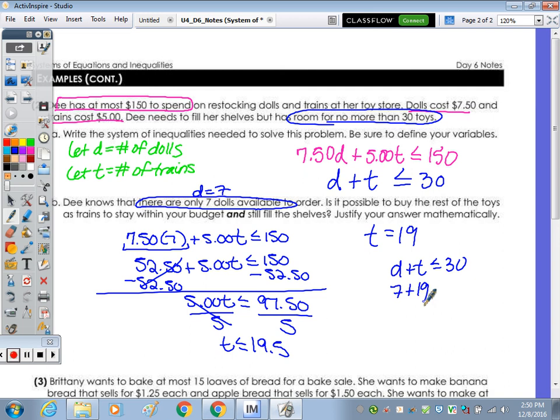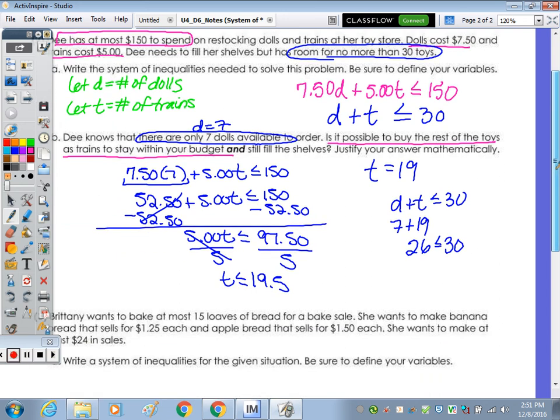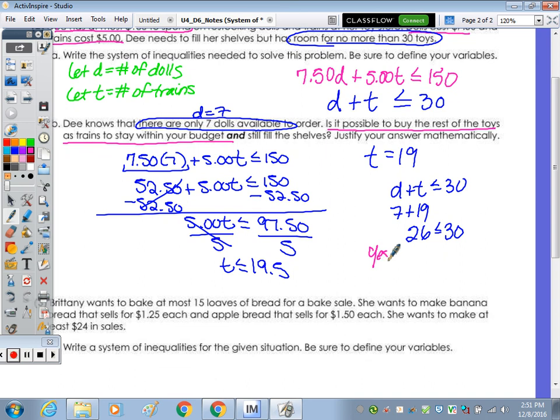So if I plug in the 7 dolls she knew and had the 19 trains, what's that a total of for toys? 26. That is less than or equal to 30. So to answer the question, the first part said, is it possible to buy the rest of toys as trains and stay within their budget? Is that the yes or no? Yes.